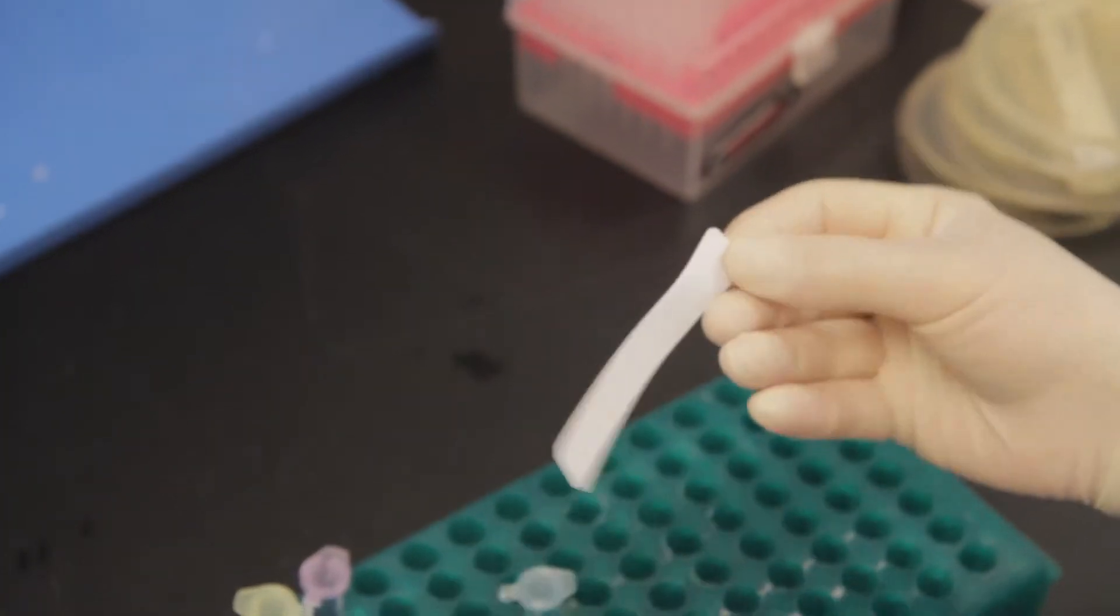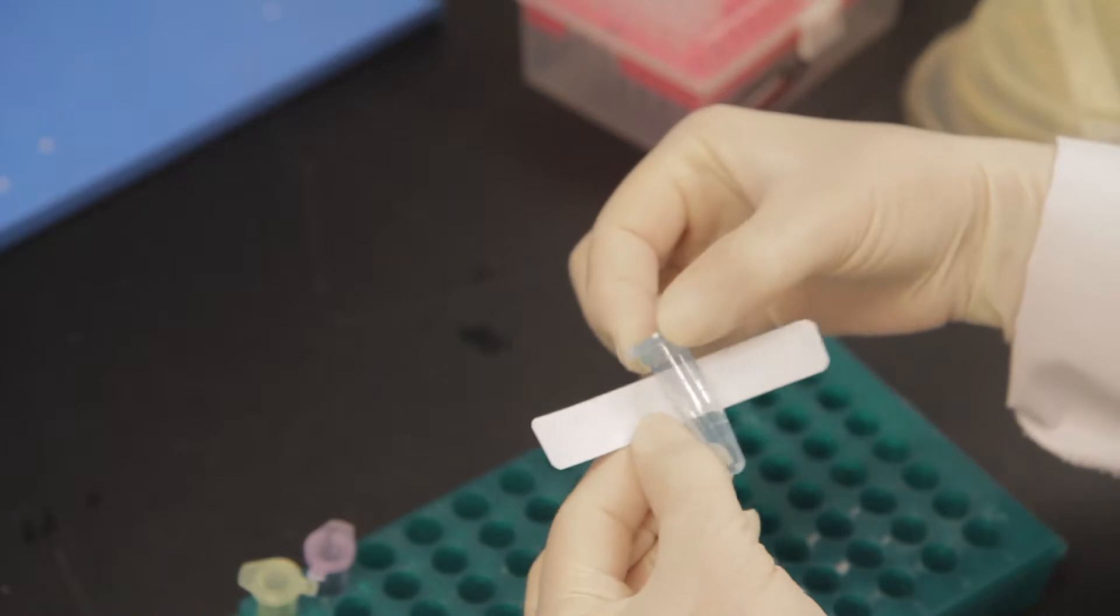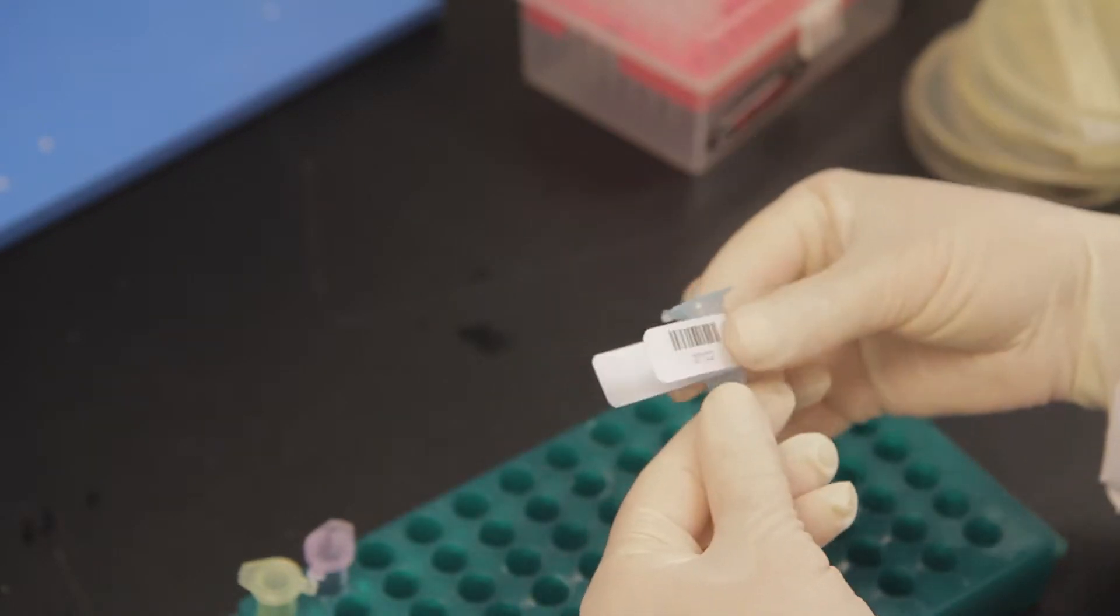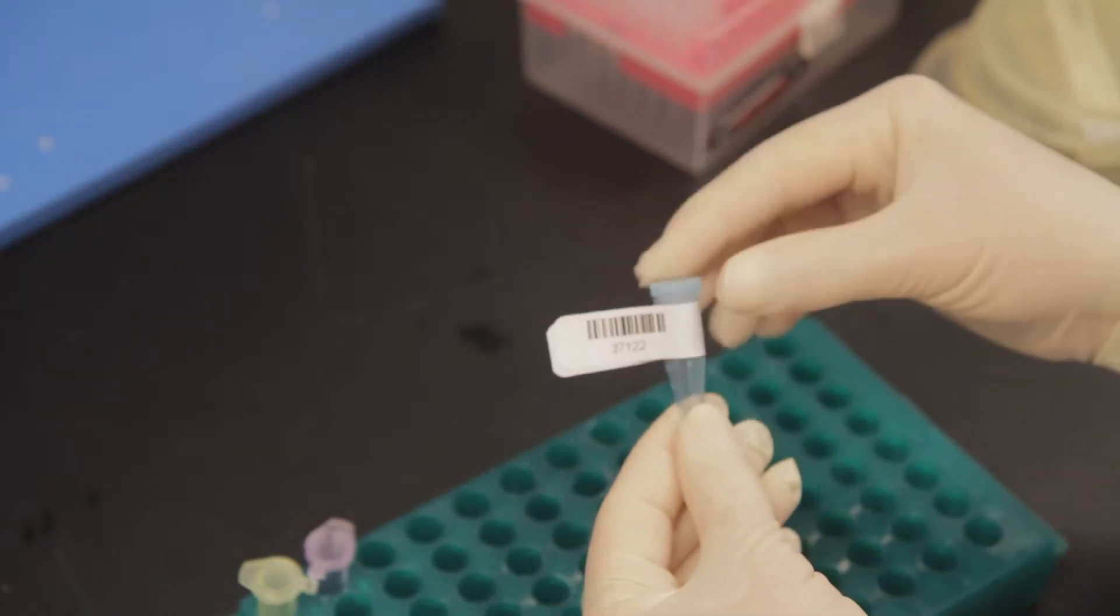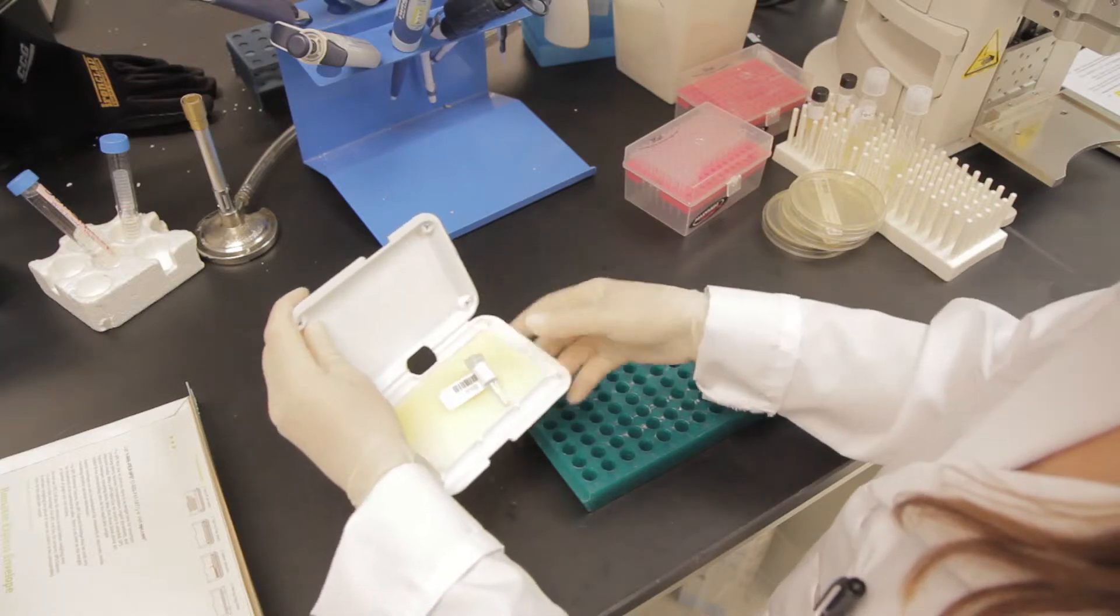If barcodes were enclosed in your package, adhere the barcoded labels to the tubes so that the barcodes can easily be scanned. Place the tubes in the plastic shipper and place the shipper in the shipping envelope.